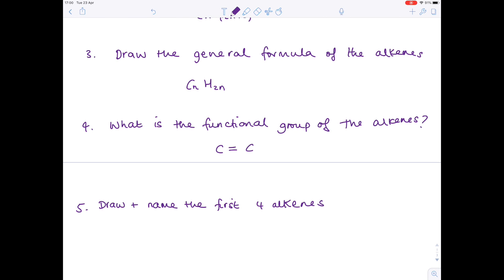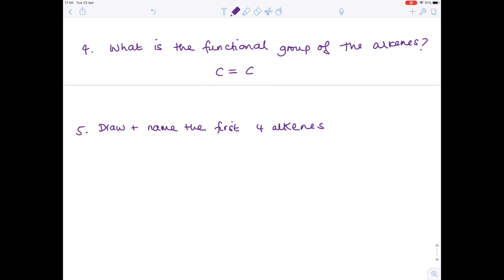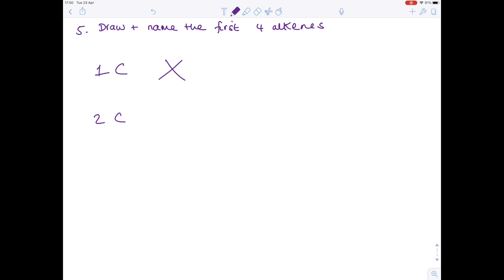Question five: draw and name the first four alkenes. Hopefully you realize there's no such thing as a one-carbon alkene because you need a minimum of two carbons to have an alkene. So automatically we move on to two-carbon alkenes, three-carbon alkenes, four-carbon alkenes, and five-carbon alkenes.